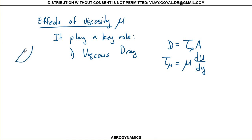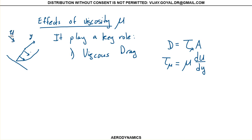If you have a boundary layer and a surface perpendicular to it, y is that perpendicular distance and u is the stream velocity. So the viscous stress is mu times du/dy.